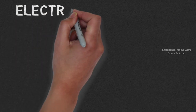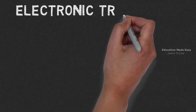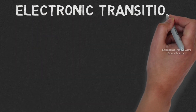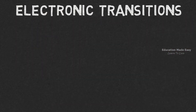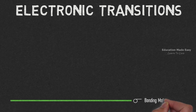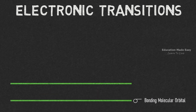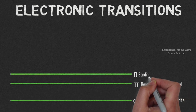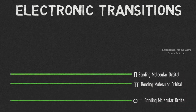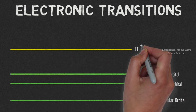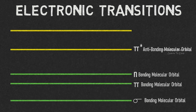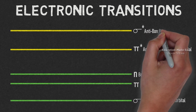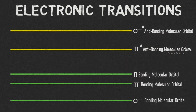Electronic transitions are caused by five molecular orbitals: the sigma bonding molecular orbital, pi bonding molecular orbital, n bonding molecular orbital, pi star anti-bonding molecular orbital, and sigma star anti-bonding molecular orbital.